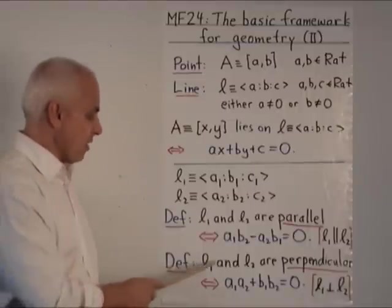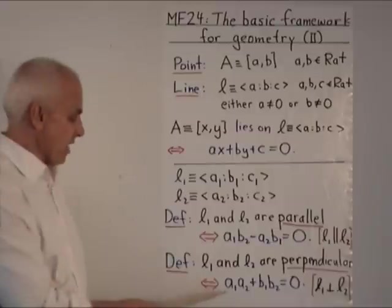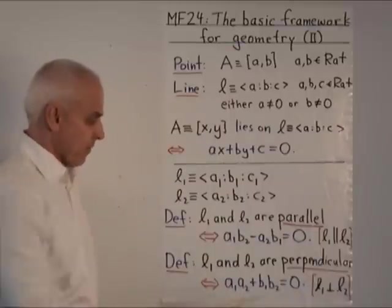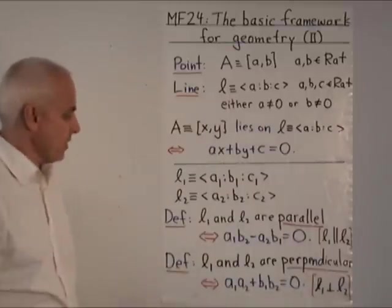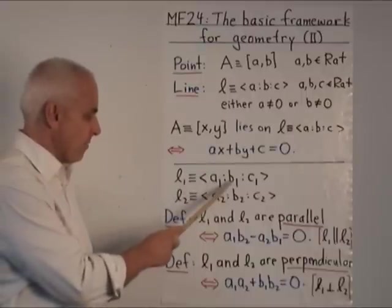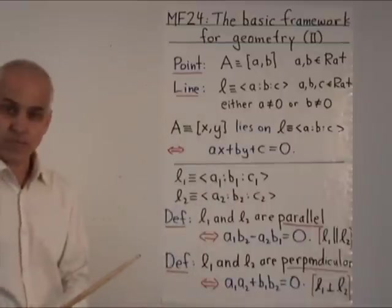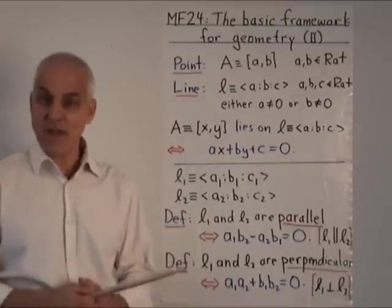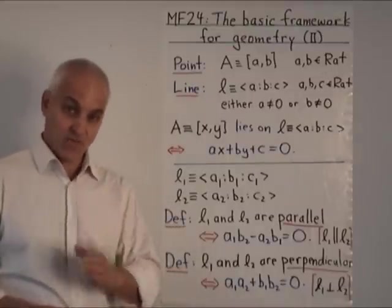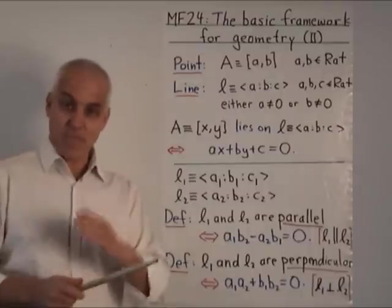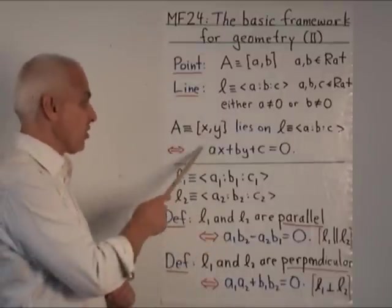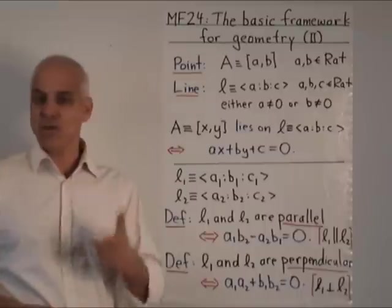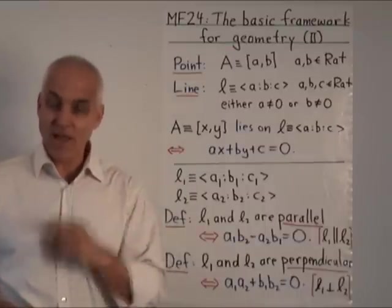We say that two lines are perpendicular precisely when a₁ times a₂ plus b₁ times b₂ equals zero. We write that L1 perpendicular to L2. In that case it means that this times this plus this times this should equal zero. These two definitions are completely independent of any pictures. But if you draw lots of examples using ordinary graph paper, you will see very quickly that these correspond to the usual familiar notions of parallel and perpendicular lines.